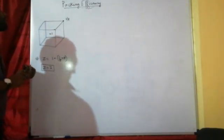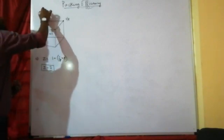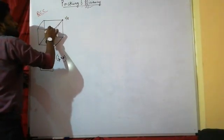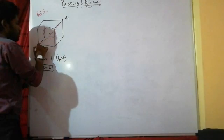Now we calculate the radius and edge length relation for the BCC unit cell. In BCC, the body diagonal touches each other — the body center atom and the corner atoms are present at the corners and touch along the body diagonal.